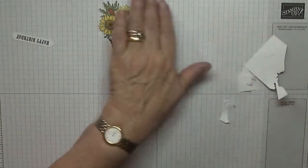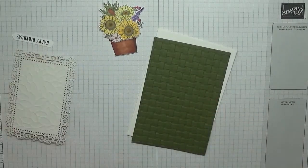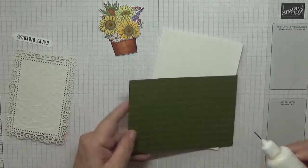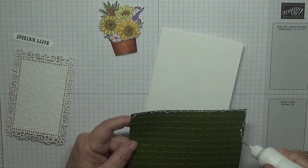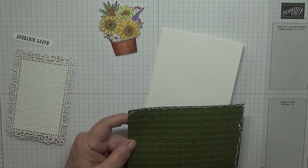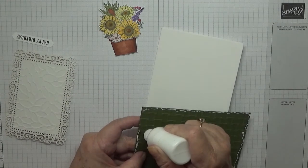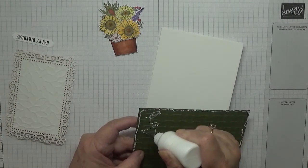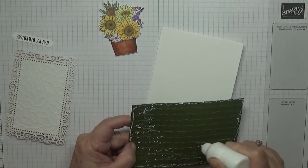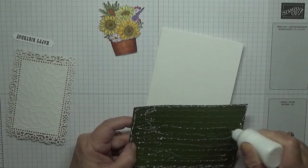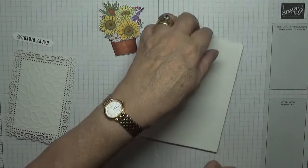There we are, all done. So now we can stick this down. With embossed card as you know, I always try and get glue on the raised bits. There are the bits that are going to stick to your card. Stick that on there.